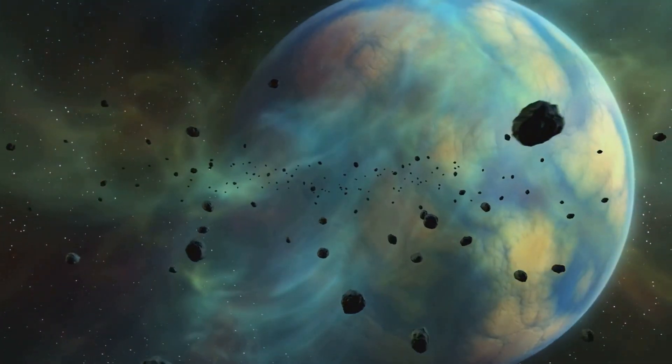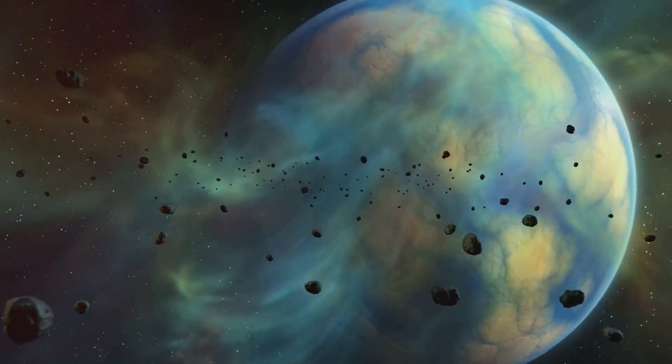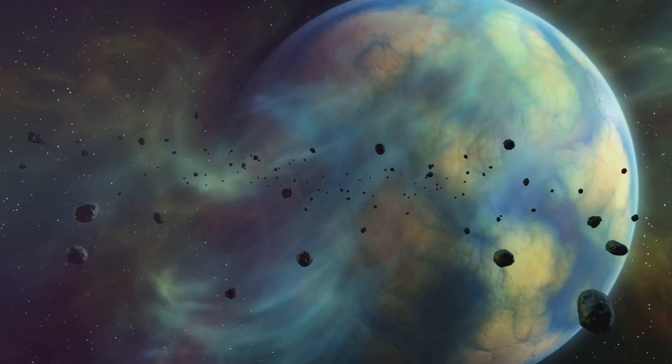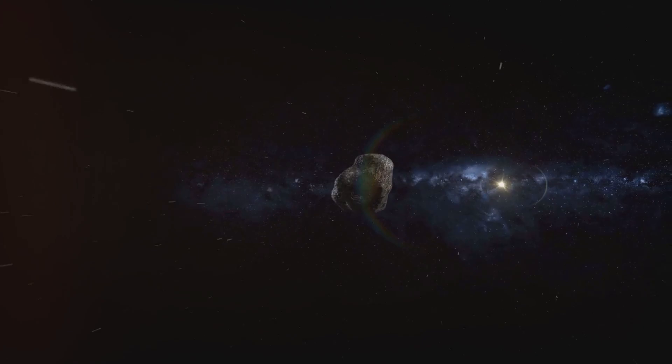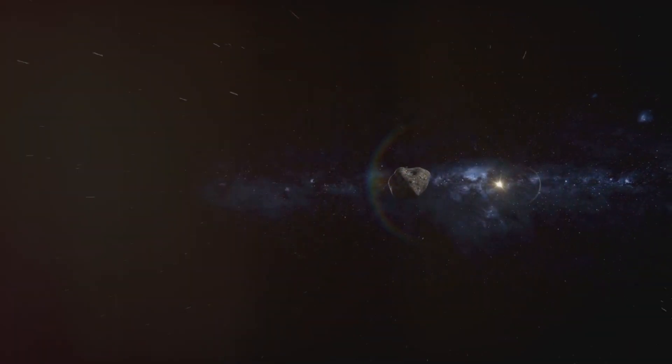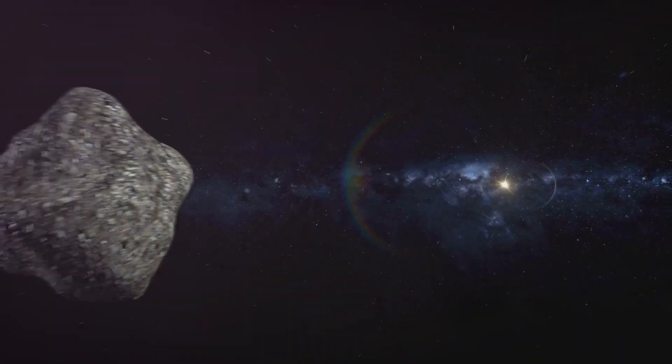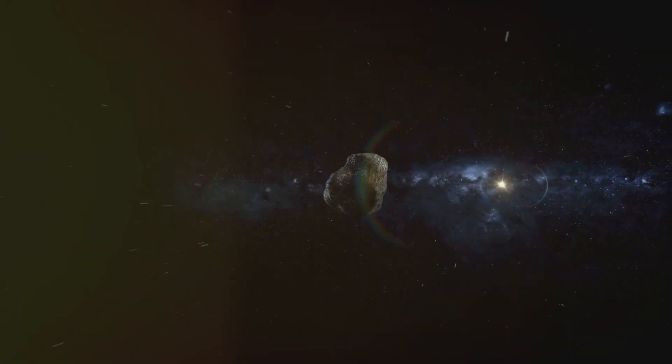When an asteroid ventures too close to Jupiter, the planet's gravitational pull can dramatically alter its orbit. This can either fling the asteroid out into the far reaches of the solar system or send it on a new path. This means that many asteroids get redirected away from Earth, reducing the chances of a collision.